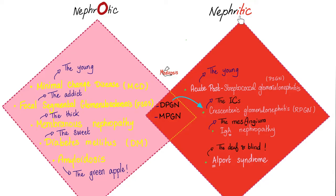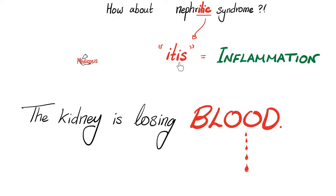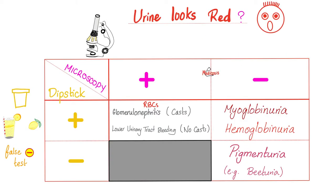Just remember, when it ends in 'itis,' it's a nephritic syndrome — the kidney is inflamed and shedding tears of blood. Not everything that shines is gold, and not every urine that looks red is actually blood. It could be red because of a pigment such as beet in the urine — beeturia — or because there is myoglobin or hemoglobin in the urine. All of this is not true hematuria.